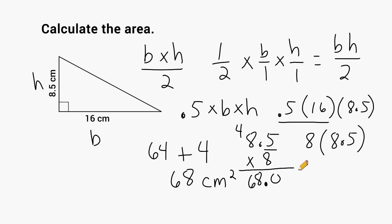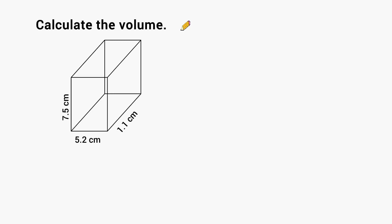All right. Now we're going to use decimal multiplication to find the volume of a rectangular prism. To find the volume of any rectangular prism, that will always be equal to its length times its width times its height.